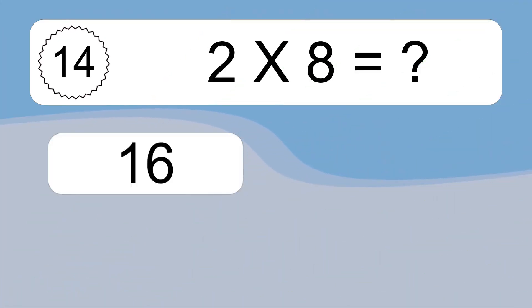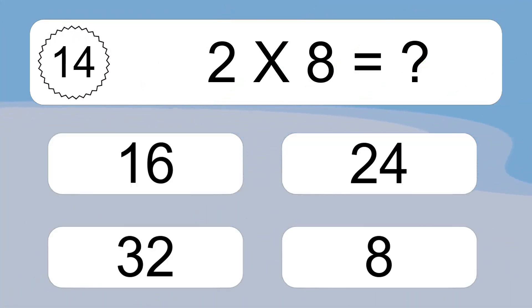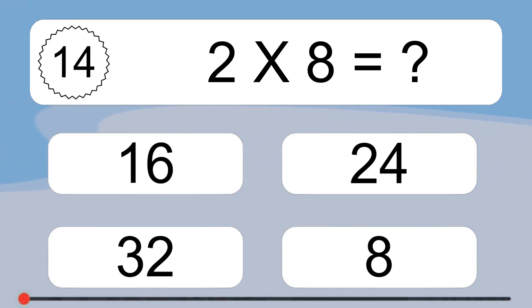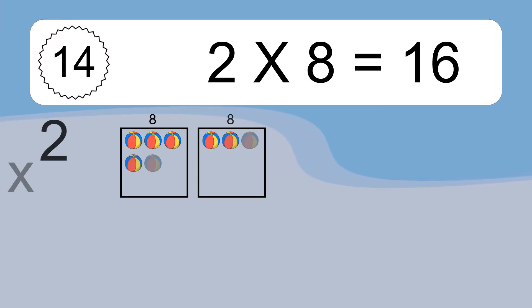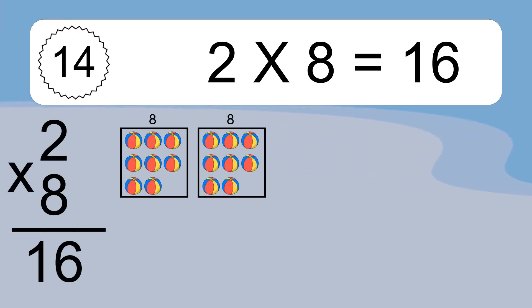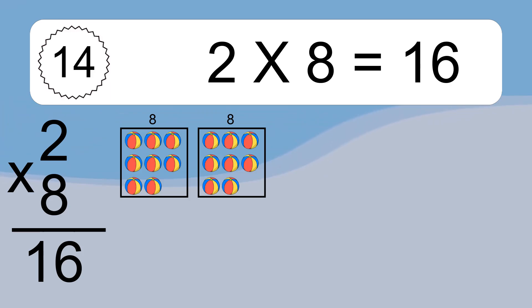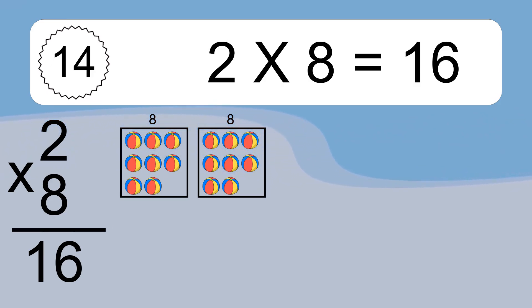2 times 8 equals what? 2 times 8 equals 16. We have 2 boxes, and each box has 8 colorful balls inside. If you count all the balls in all the boxes together, you will have 2 times 8 balls. This equals 16 balls.